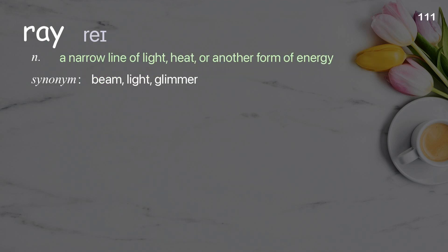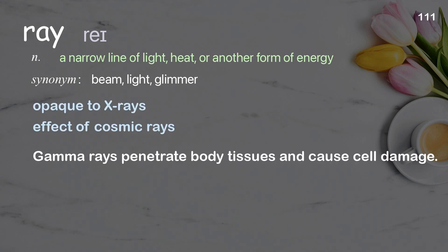Ray: a narrow line of light, heat, or another form of energy. Examples: opaque to x-rays, effect of cosmic rays. Gamma rays penetrate body tissues and cause cell damage.